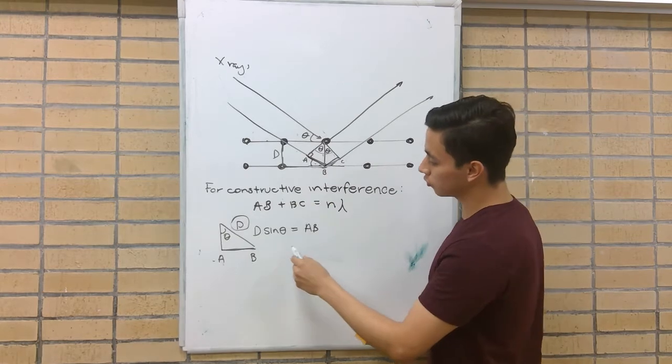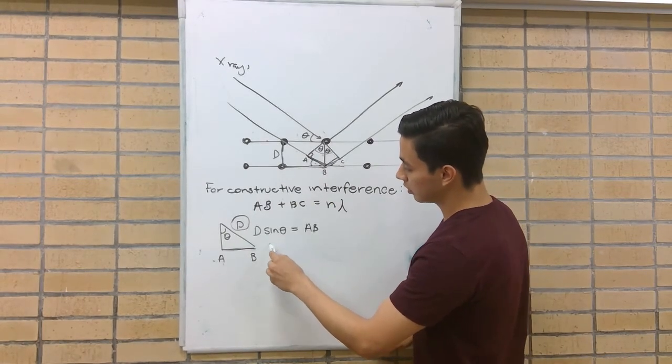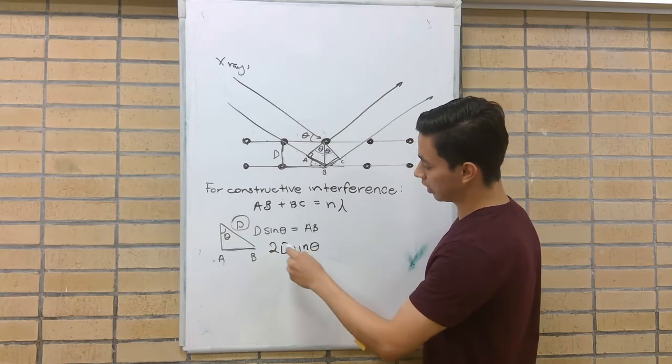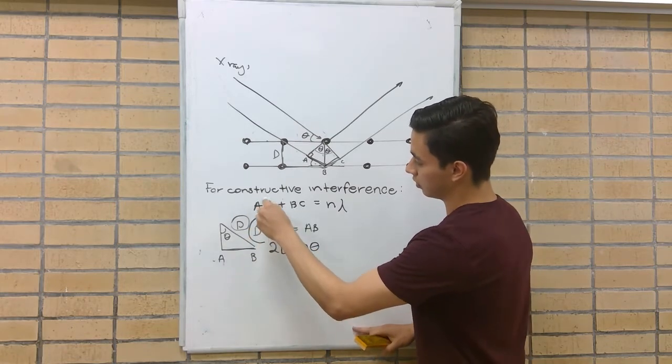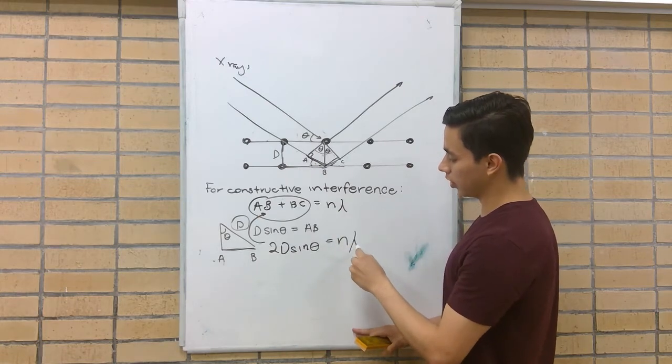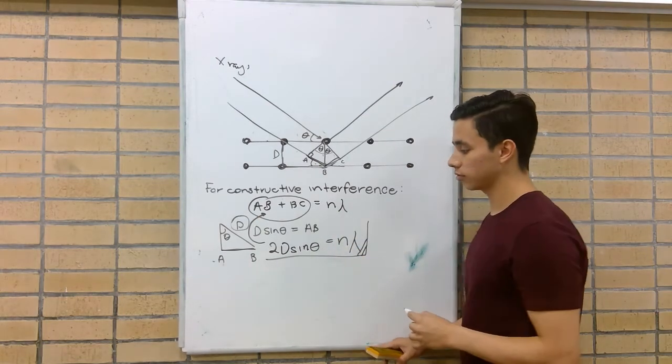But we know that AB equals BC, so we have 2D sine of theta, and this will be equal to n lambda, and that is Bragg's Law.